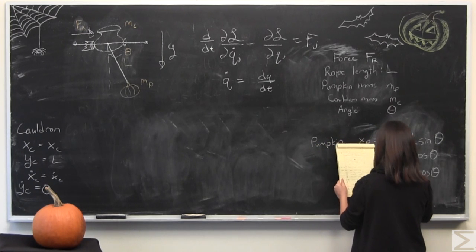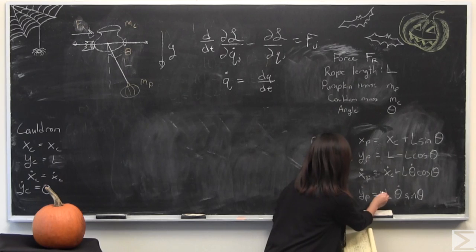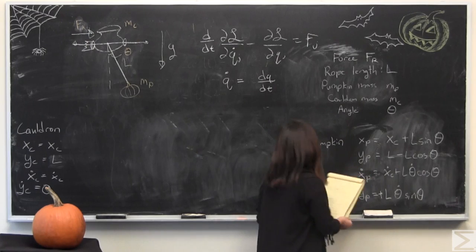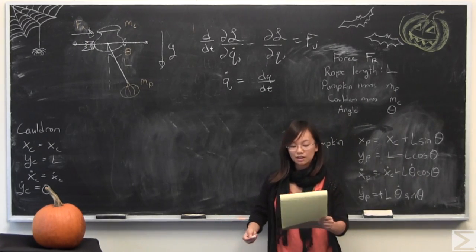Yp dot, similar story. It should be positive because you're subtracting. I took the total derivative with respect to time, I got L theta dot sine theta. That is basically all you need in order to solve this, but plugging in can be a little challenging.